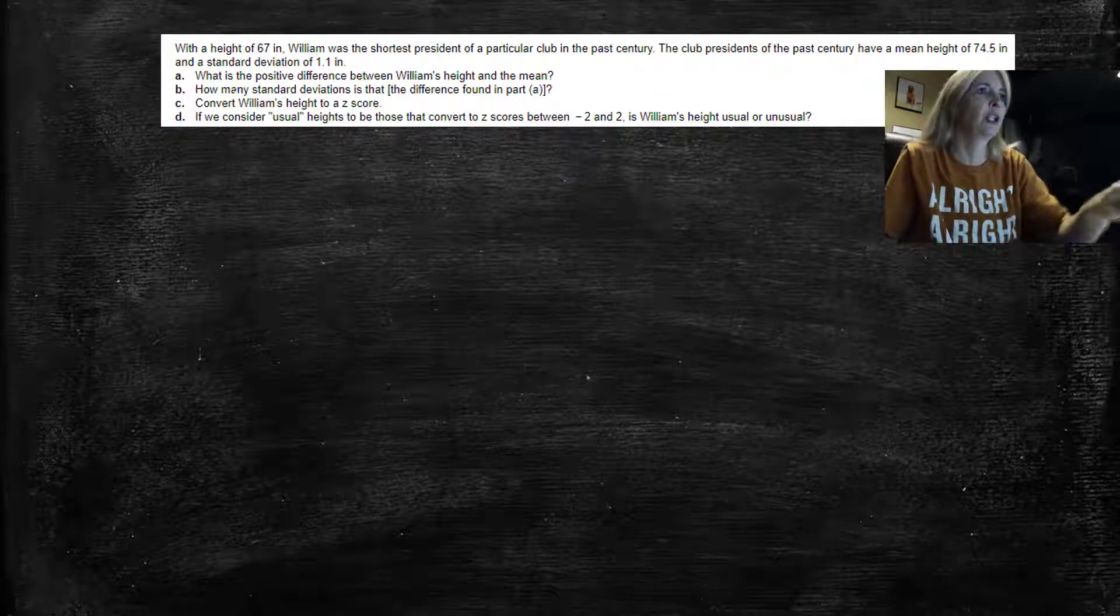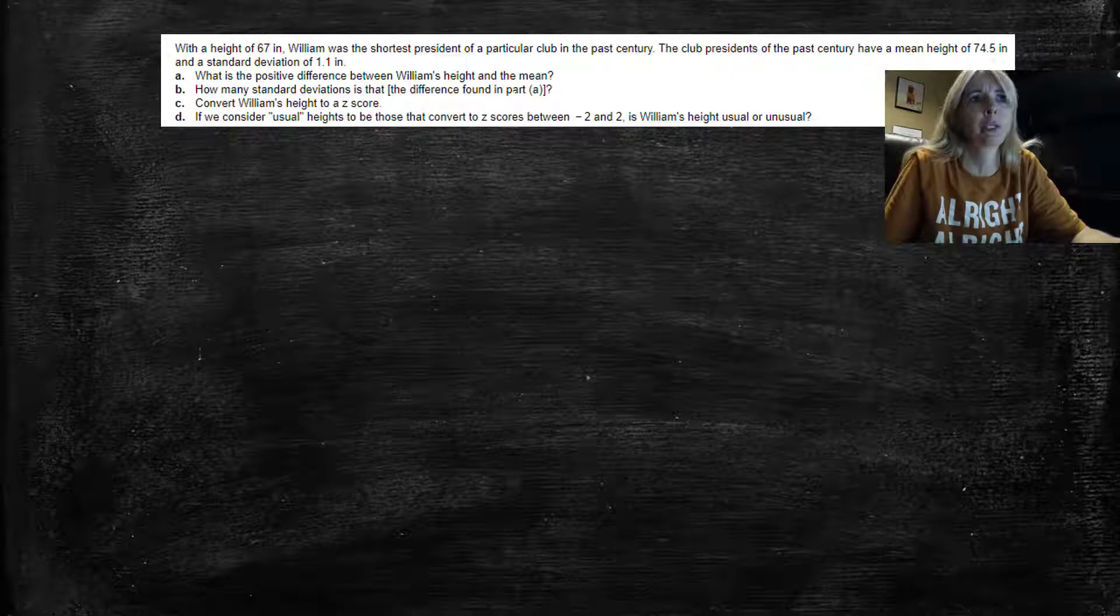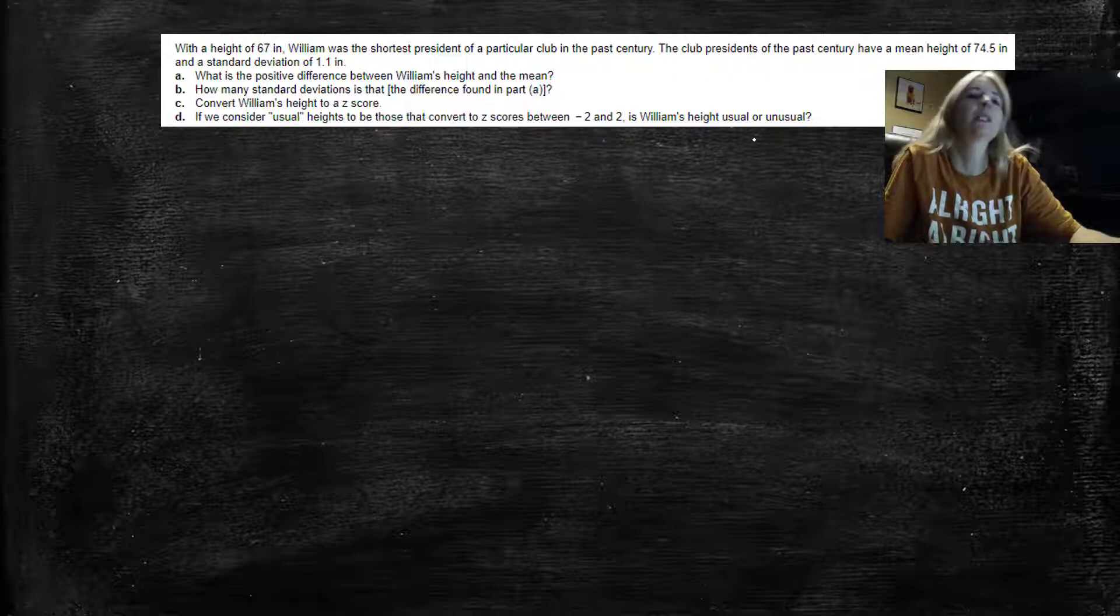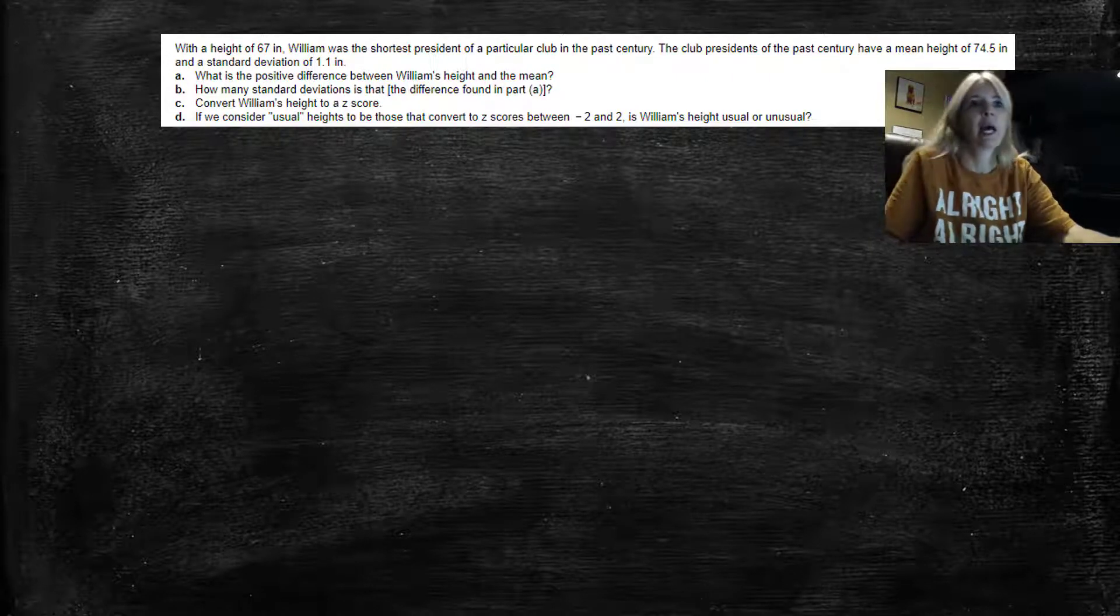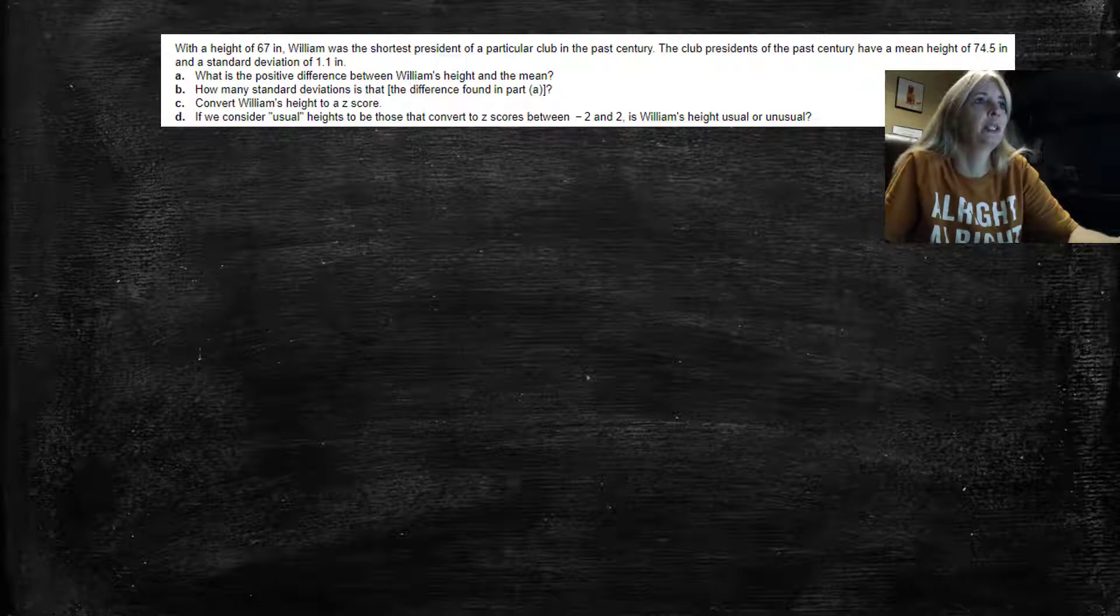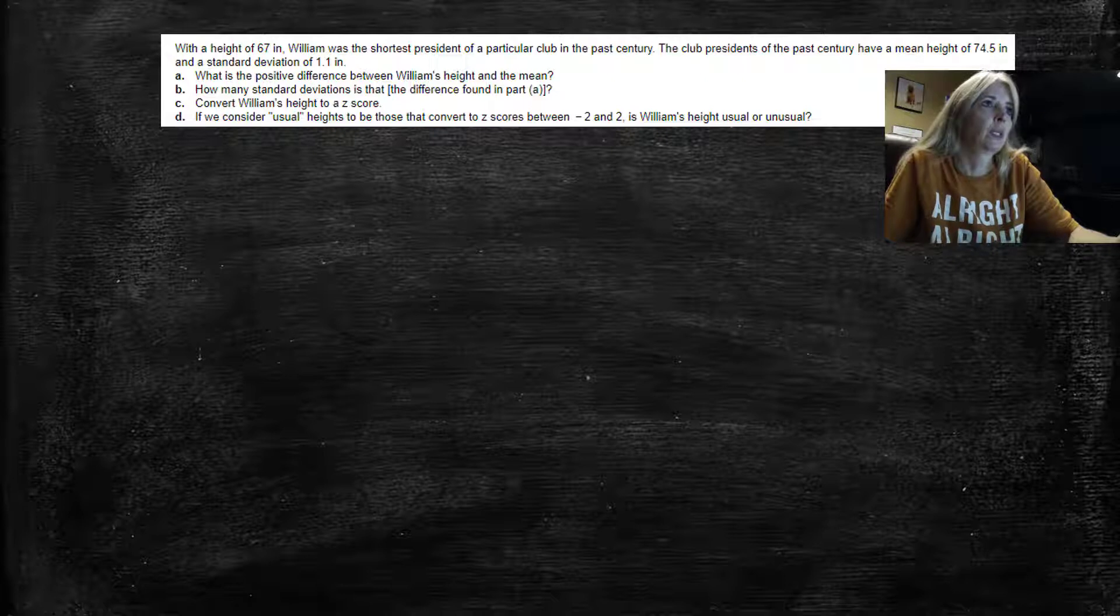Okay, so we have this question. With a height of 67 inches, William was the shortest president of a particular club in the past century. The club presidents of the past century have had a mean height of 74.5 inches and a standard deviation of 1.1. What is the positive difference between William's height and the mean?